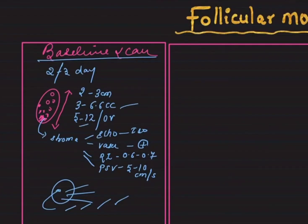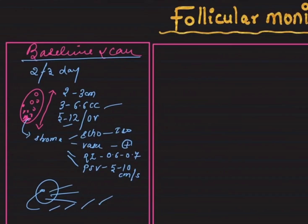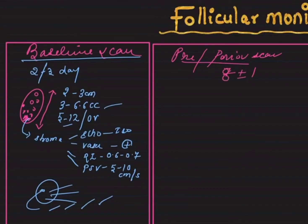The 'why' of this baseline scan — why it is necessary, why the 5 to 12 follicle count matters, why 6.6 cc is important — all these questions will be discussed in part two. This baseline scan is done on the second or third day of the last menstrual period. The next phase is the pre- or periovulatory scan, usually done from day 8 plus or minus 1 — that is day 7, 8, or 9 — and we call the patient every alternate day.